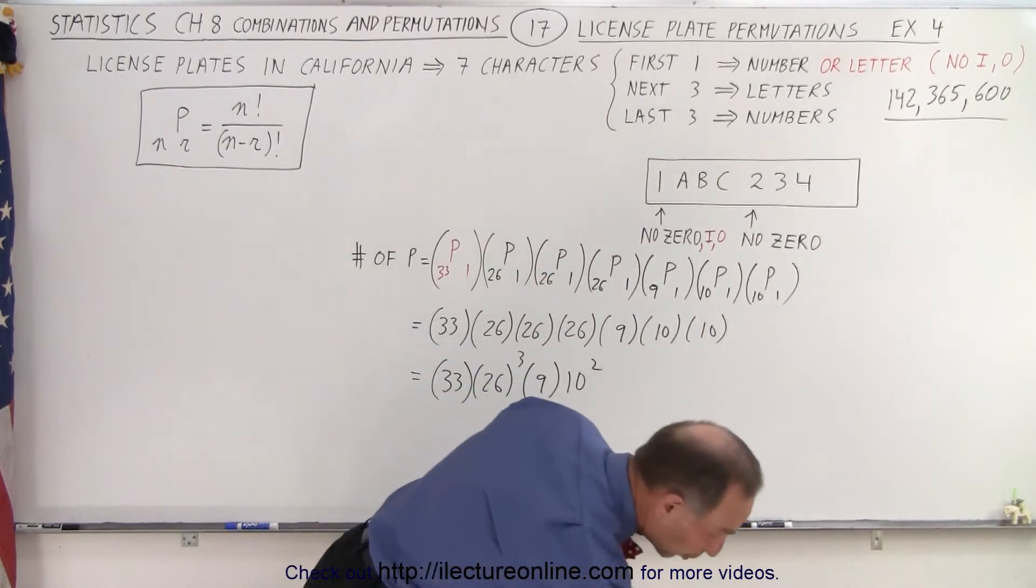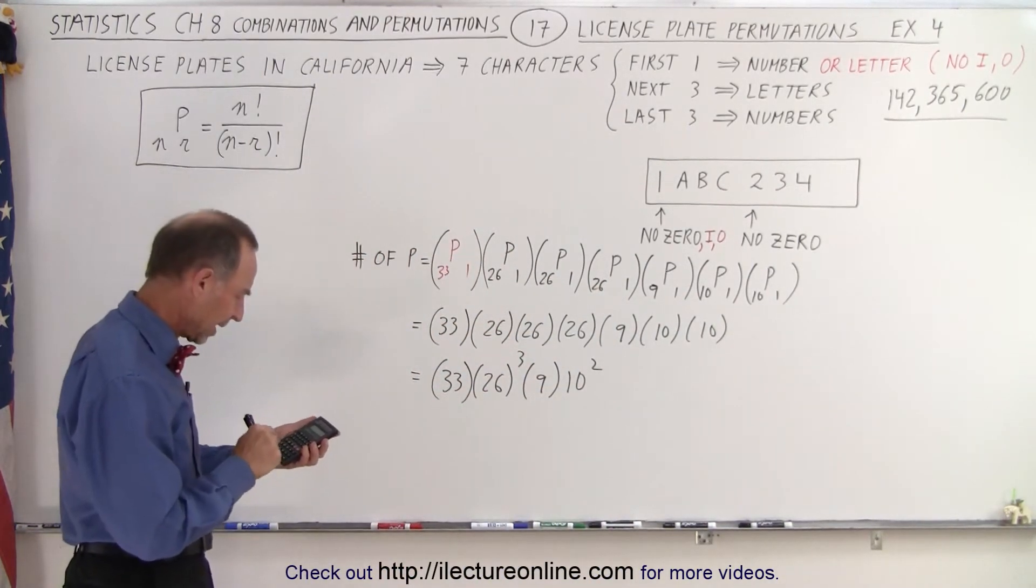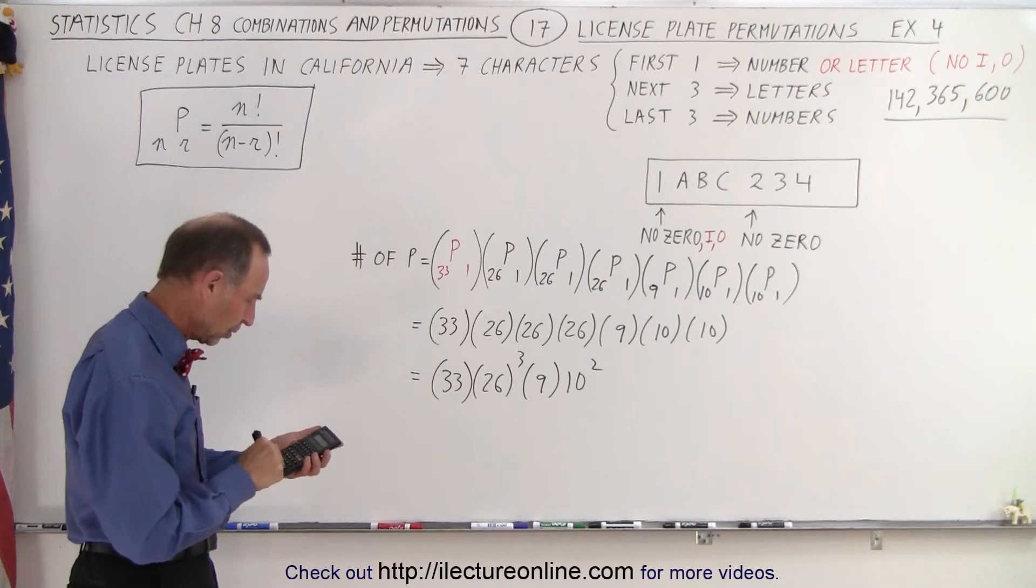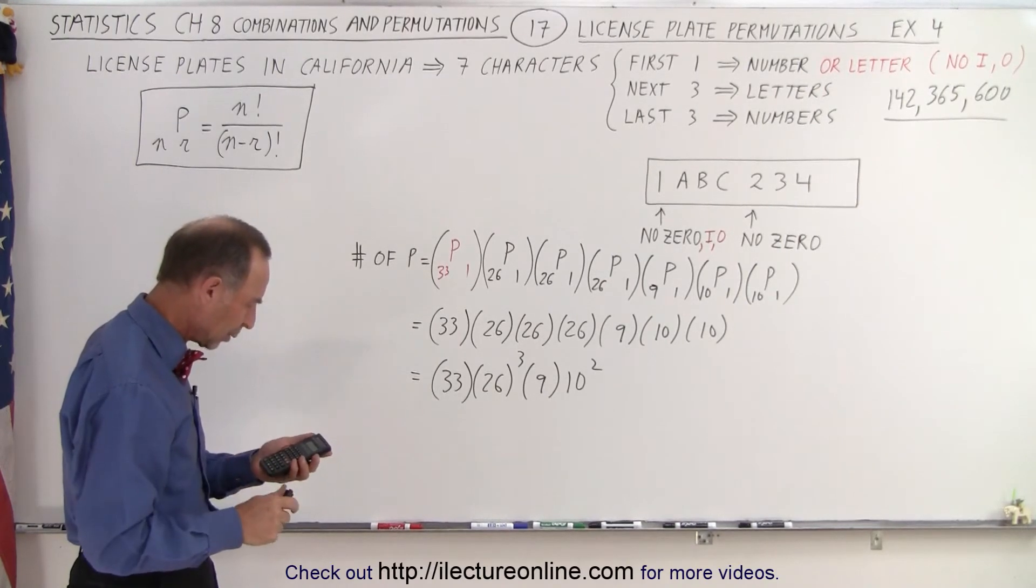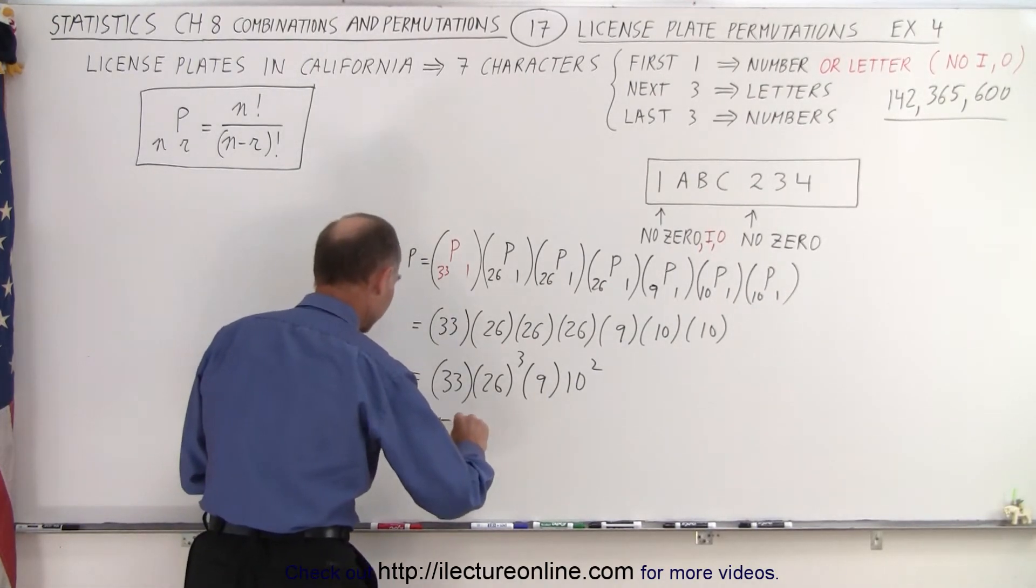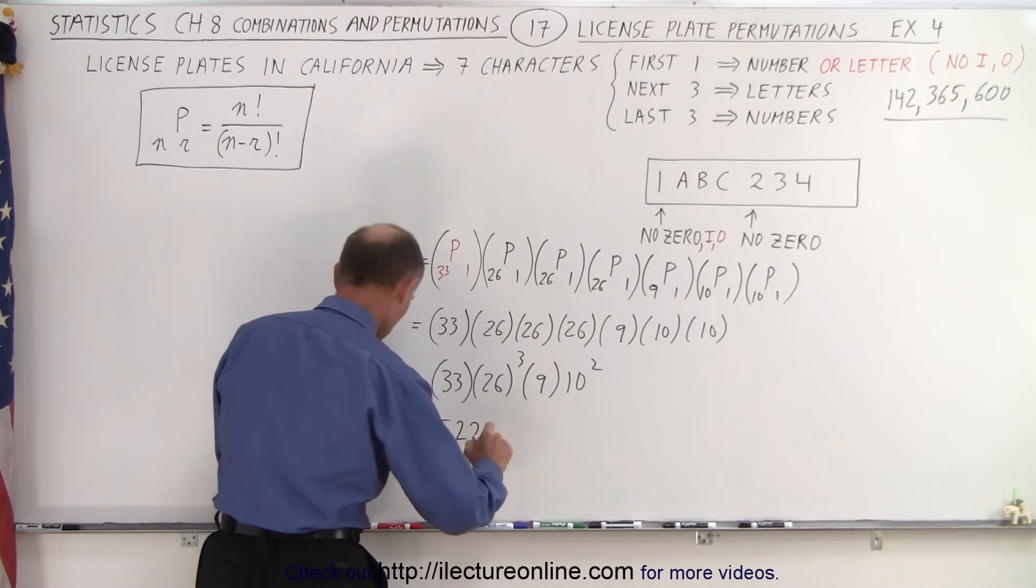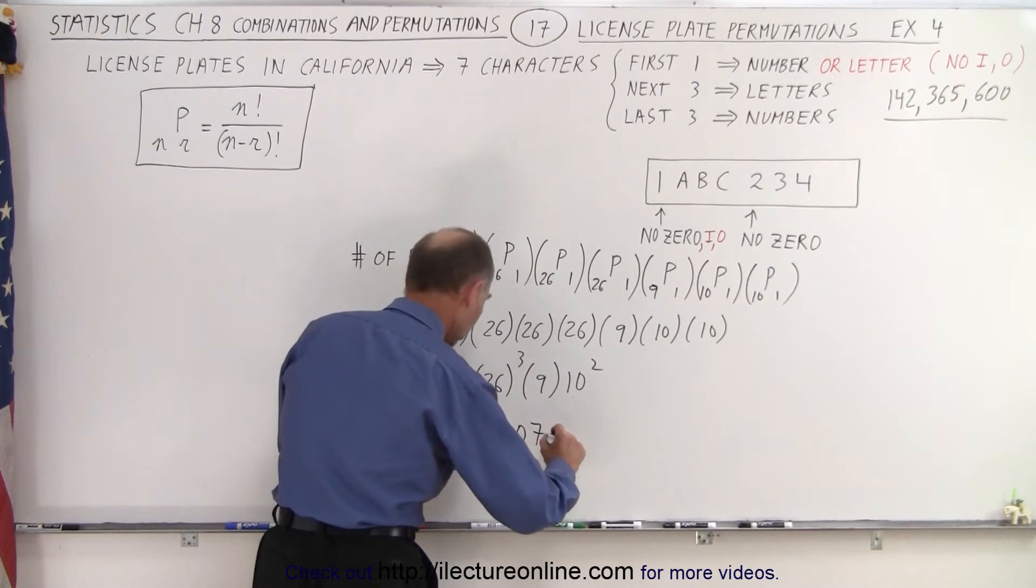So let's see how many total permutations we have this time. So we have 33 times 26 cubed times 9 times 100, and that now gives us, wow, quite a few more. Now we have as many as 522 million, 7,200.